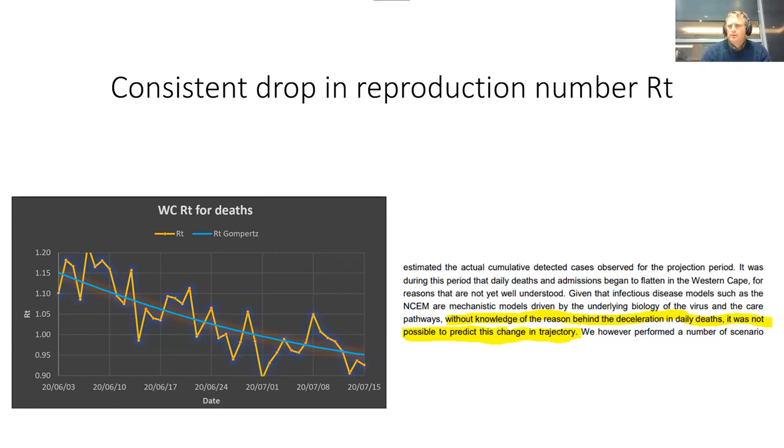But then another way to predict what's going to happen is to merely follow the R-number, which in many cases, at a certain point, drops consistently. Then it's possible to determine when cases are going to turn or deaths are going to turn up to three weeks before it actually happens. We can see from the modelers, they didn't expect that early flattening in the curve because their eyes were focused on their model. Yet if they simply followed the reproductive number, they would have been able to see numbers coming down much, much earlier.